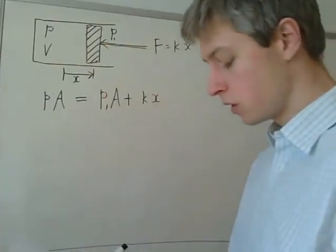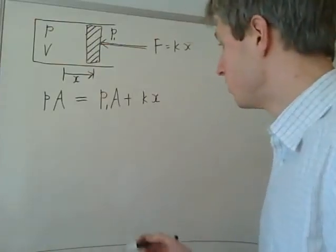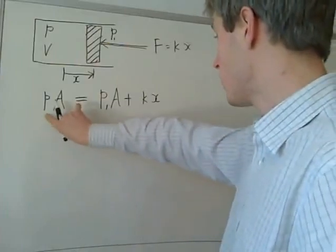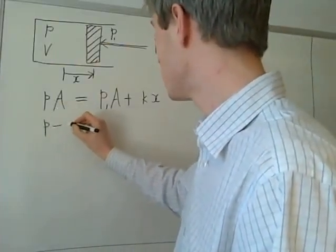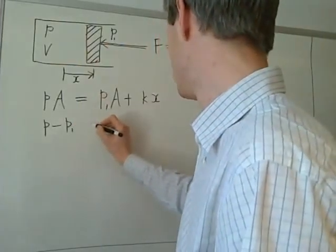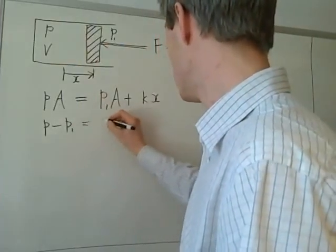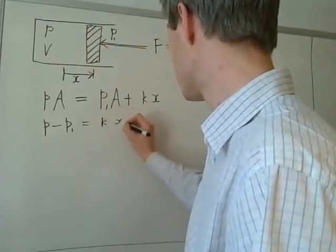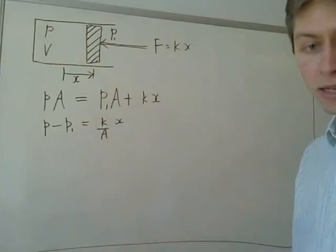Now, what the question asks us to compute involves the quantity P minus P1, and we can see that we have P and P1 here. So what we can do is say that P minus P1 is equal to k times x over A, or that P minus P1 is proportional to x.